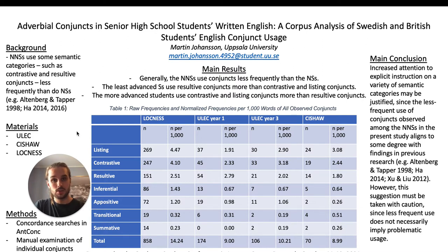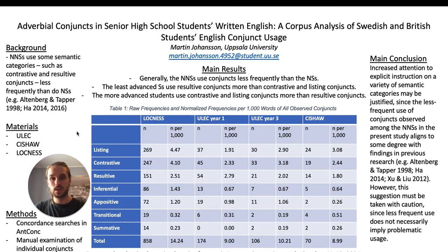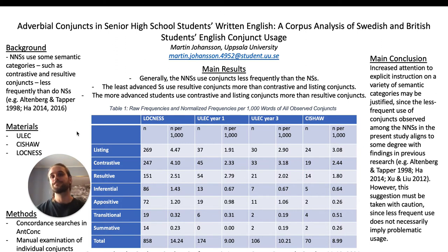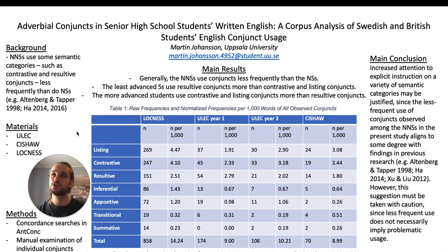The results showed many interesting things, but here I would like to focus on a particular pattern. It seems that the least advanced students use resultive conjuncts more than contrastive conjuncts — that is to say, they use conjuncts such as 'so' and 'therefore' more than conjuncts such as 'however' or 'on the other hand.' The more advanced students, on the other hand, flipped the pattern: they use contrastive conjuncts more than resultive.